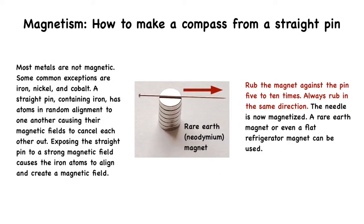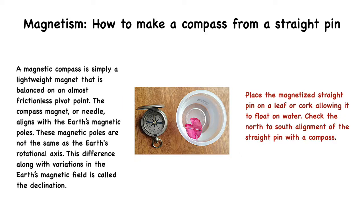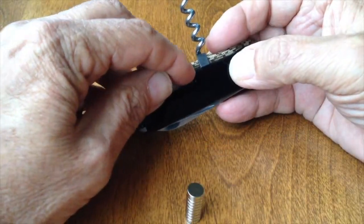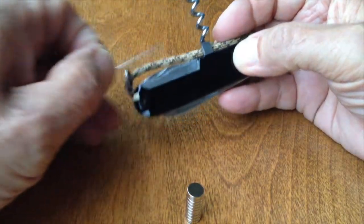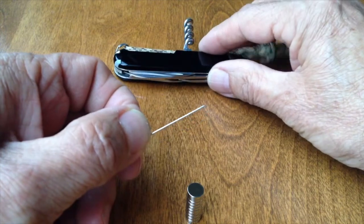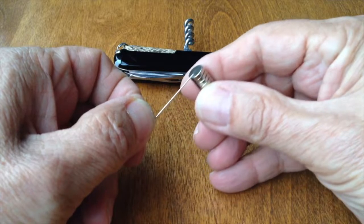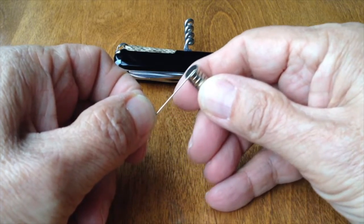How about making a compass? Most metals are not magnetic. Some common exceptions are iron, nickel, and cobalt. The straight pin containing iron has atoms in random alignment to one another causing their magnetic fields to cancel each other out. Exposing the straight pin to a strong magnetic field causes the atoms to align. I rub a magnet against the pin five to ten times. Always rub in the same direction. The needle is now magnetized. A rare earth magnet or even a flat refrigerator magnet can be used.